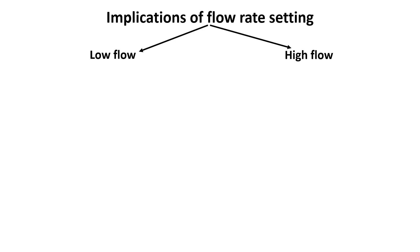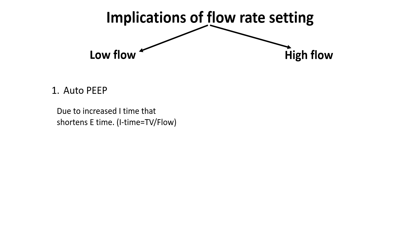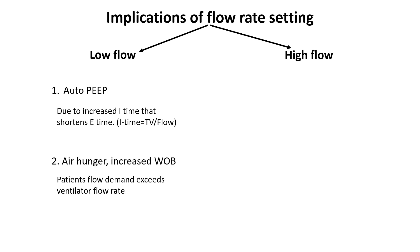A low flow rate can lead to a prolonged inspiratory time, which may reduce expiratory time and increase the risk of breath stacking or auto-PEEP. It can also cause air hunger and ventilator dyssynchrony if the patient's inspiratory effort exceeds the delivered flow. As the ventilator fails to meet the patient's demand, they struggle to draw in enough volume, increasing respiratory effort and leading to dyssynchrony, increased work of breathing, and discomfort.